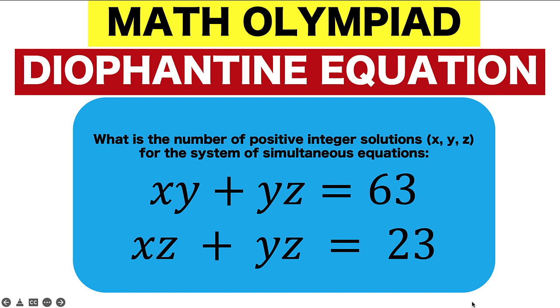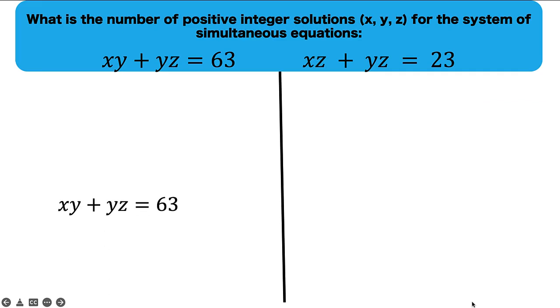You can pause the video and see if you can solve this math Olympiad question. Let's solve this problem together. Let's begin simplifying the first equation. Notice that we have here a common factor y, so let's factor out the variable y to arrive at this form. Let's go back to this form later on because there is nothing much that we can do with it.